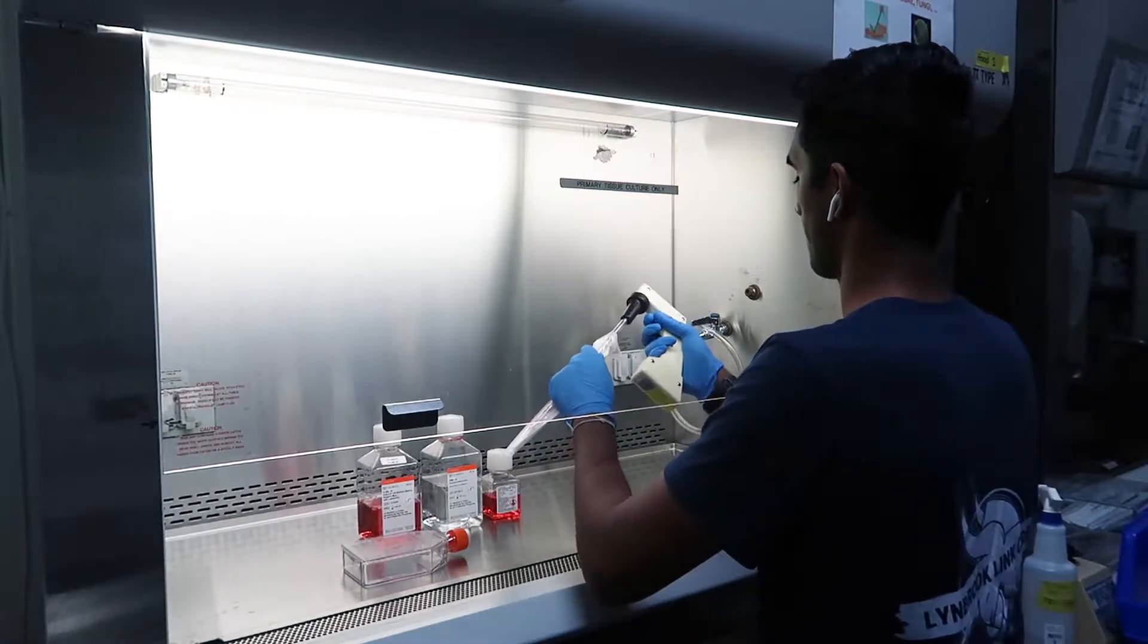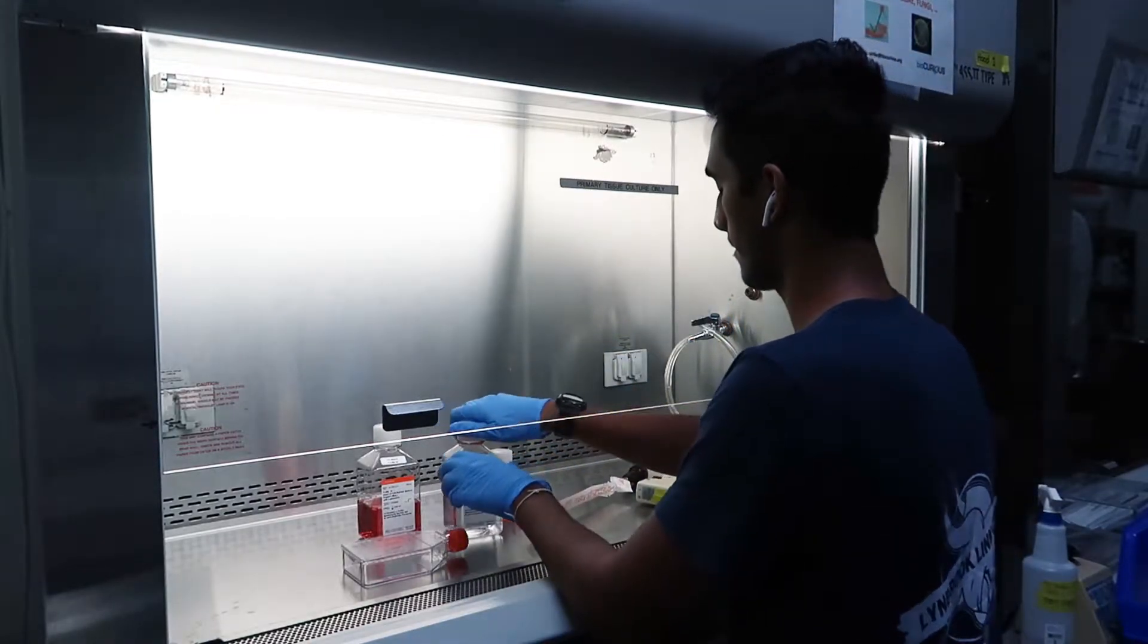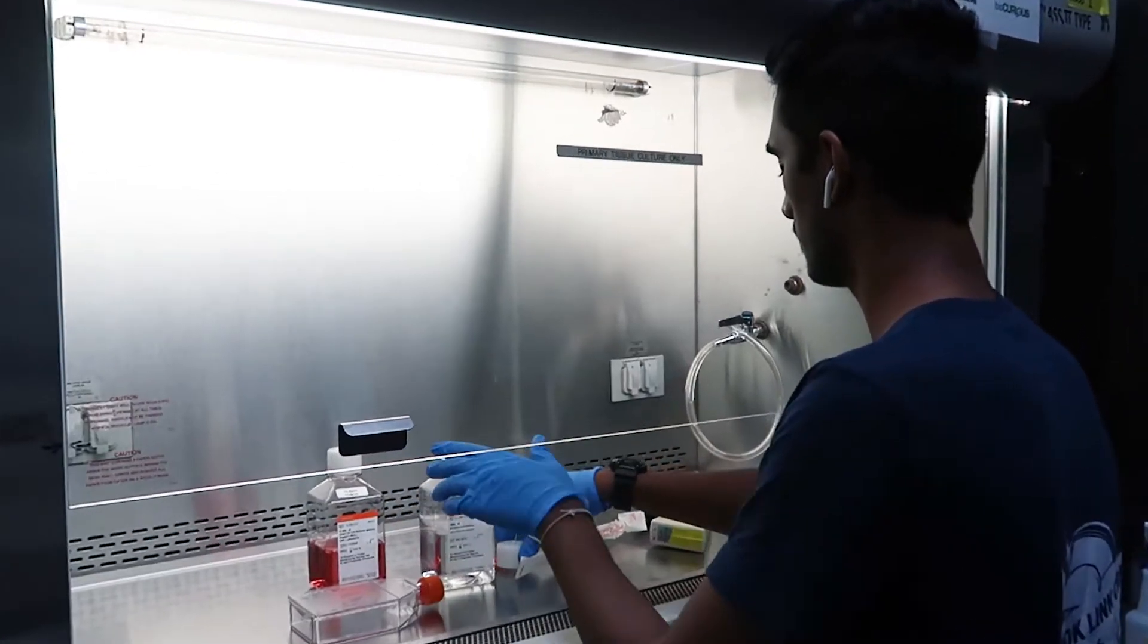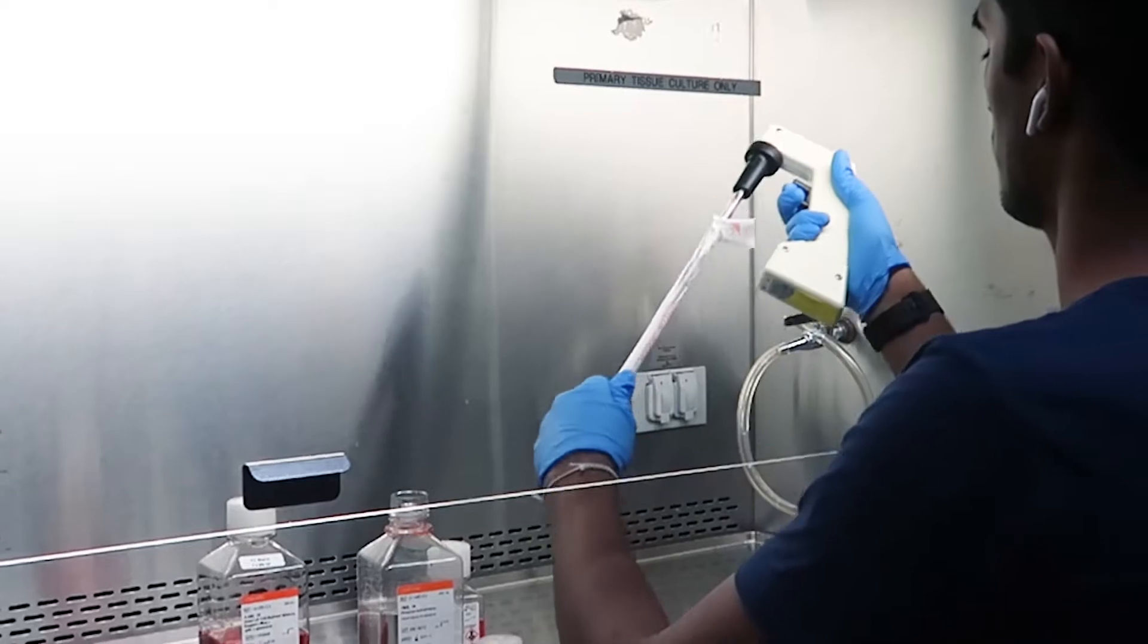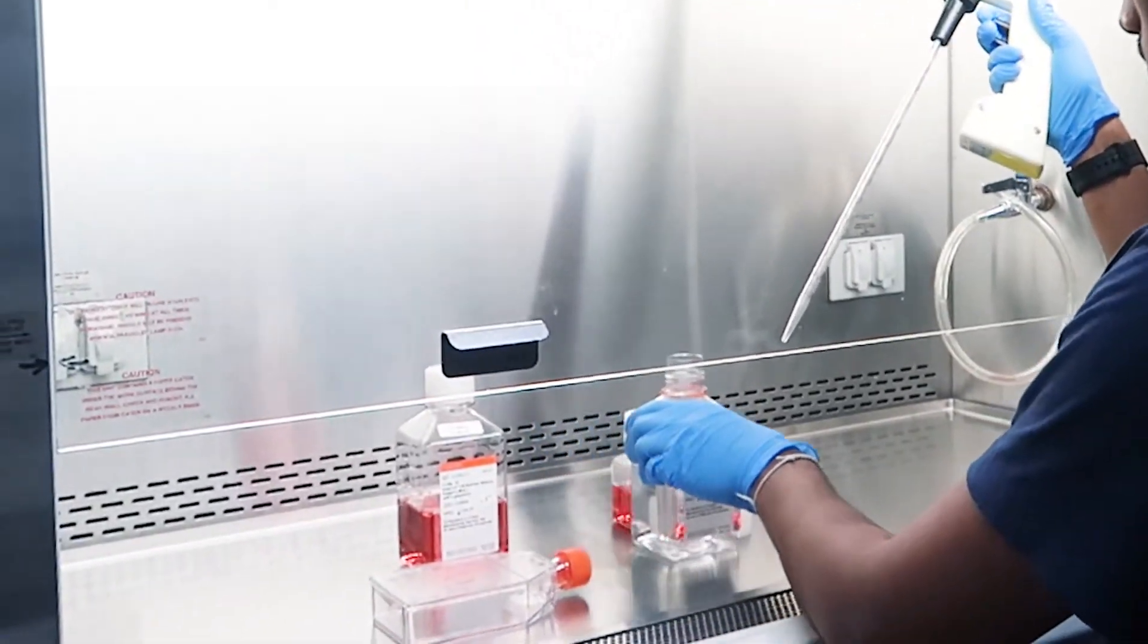Now this next step is going to be using a serological pipette, the serological pipette pump, and one times PBS. We're going to be adding 15 milliliters of this PBS to the flask containing your cells, and this is going to rinse your cells.